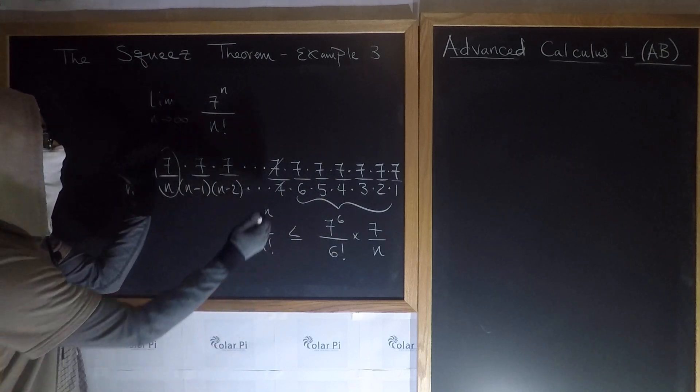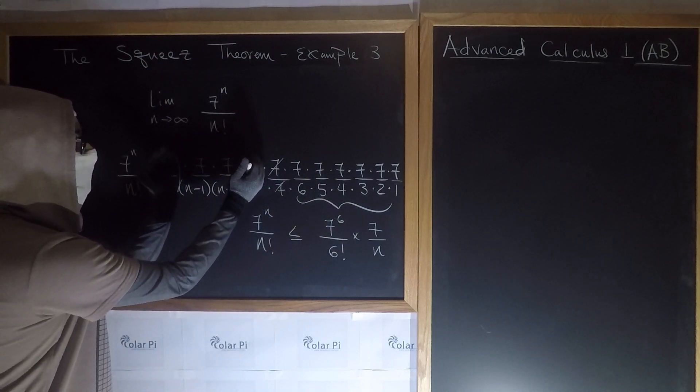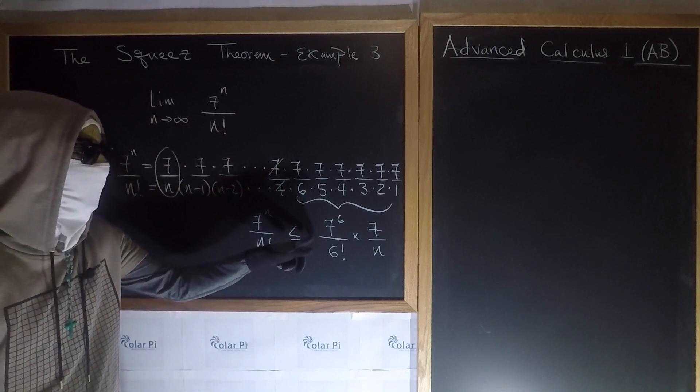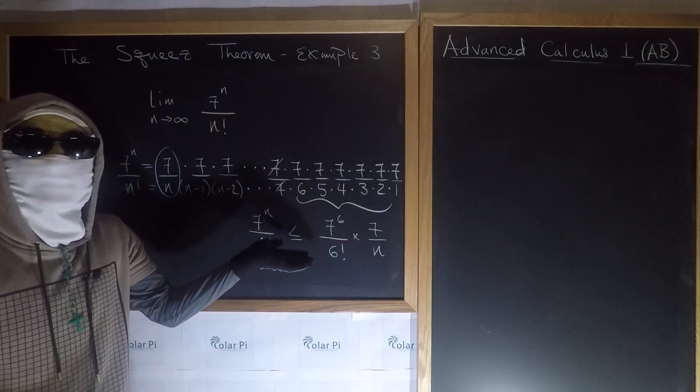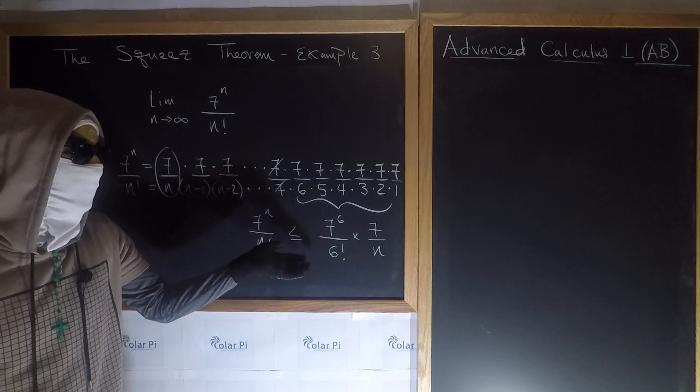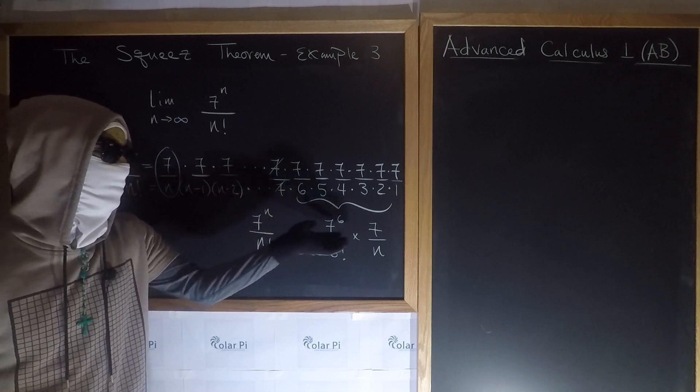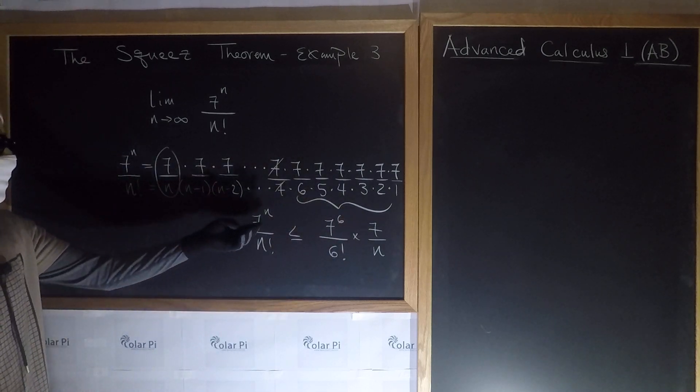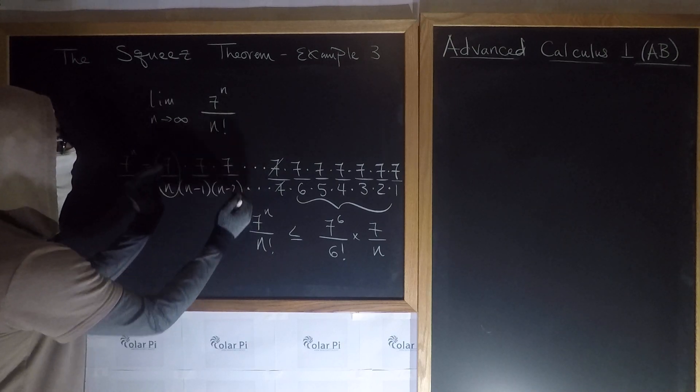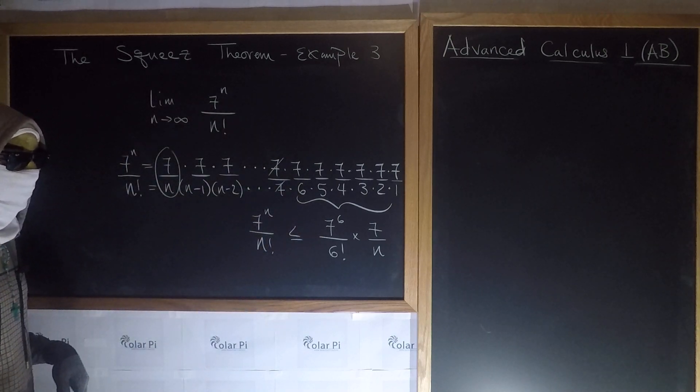Why? Because what I've done is I've taken the n minus 8 fractions in here, and I've replaced them all by 1 on this right-hand side. And of course, I don't want to write 1 times 1 n minus 8 times. I could just leave it alone. Whereas this guy here contains these guys that are less than 1, and that's why this inequality is true.